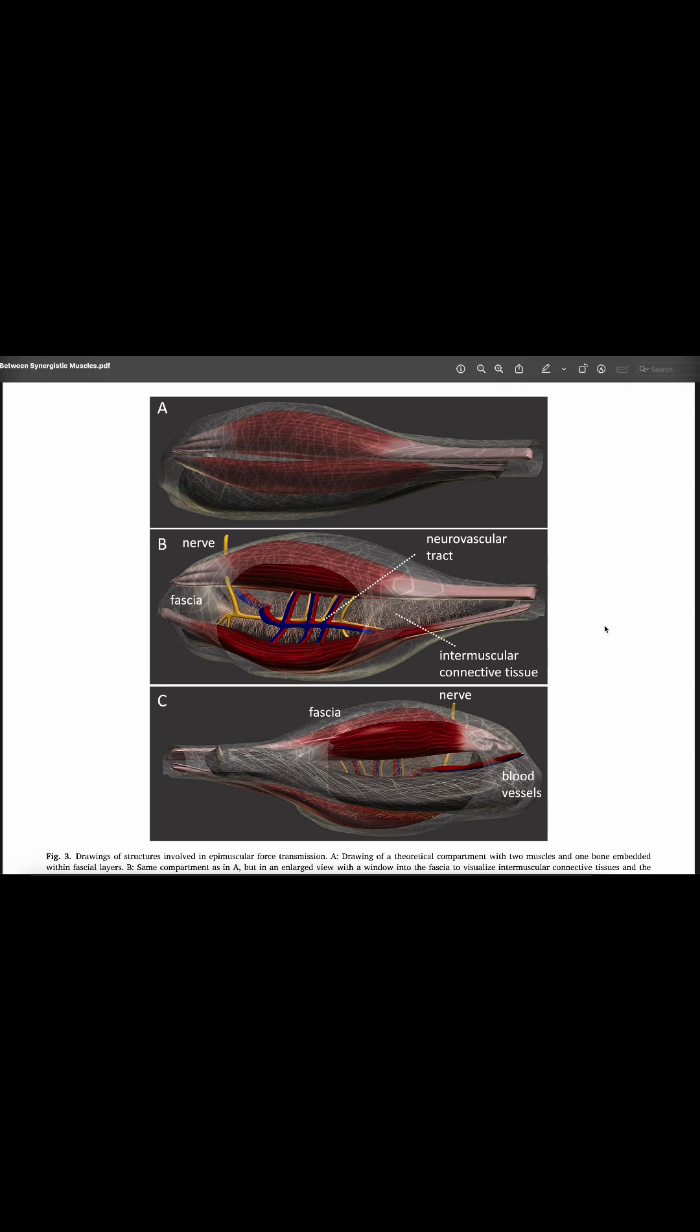This is an illustration or an animation of what they described to be a theoretical muscle. But this is essentially showing not just the enveloping fascial tissue, but also the neurovascular tracts that are going to be situated in between adjacent muscles and in between adjacent structures. So, as we can see through this,